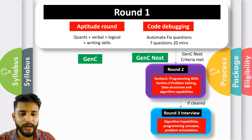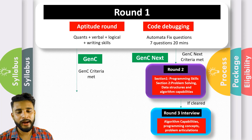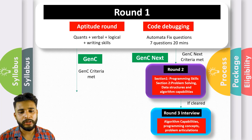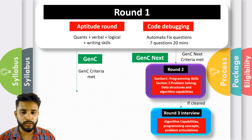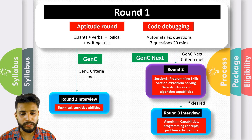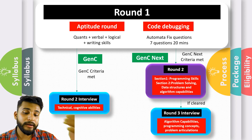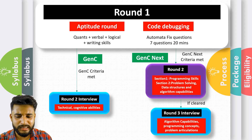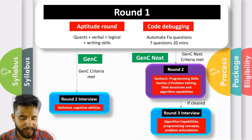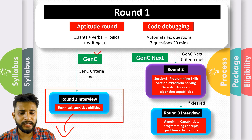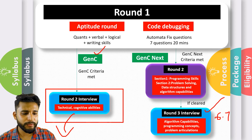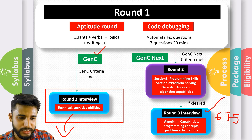Now for the Gen C process: approximately the top 75% of candidates who scored in the top 75% of marks will be chosen and can appear for the Gen C interview process. In this interview, basic technical questions related to your subject knowledge and cognitive abilities will be asked — basic reasoning and programming questions. If you clear this round, you are selected for the Gen C package of 4.5 LPA, while clearing Gen C Next gives you 6.75 LPA.